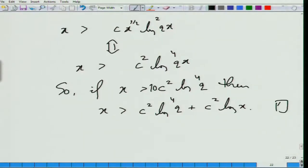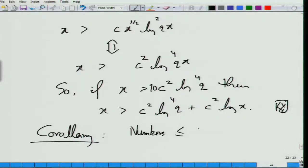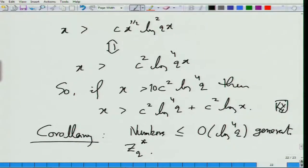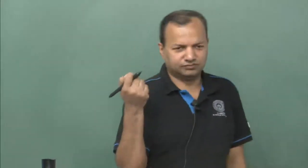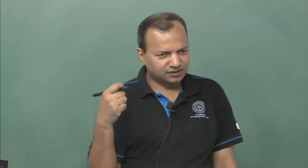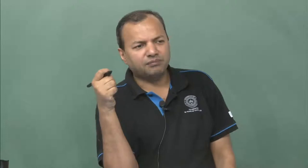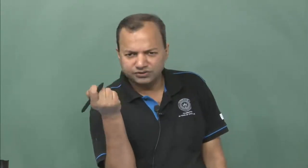So that is a good point that we have to be careful here. The corollary is that if you look at all elements of z_q* less than or equal to log^4(q), they must generate the entire group. Because if they do not, there is a proper subgroup, leading to a contradiction. There are other corollaries, like finding a quadratic non-residue modulo a prime p, which is used in factoring quadratic polynomials.